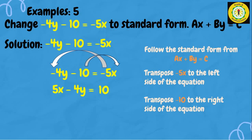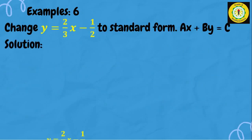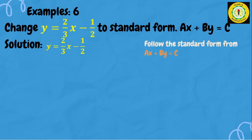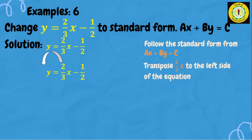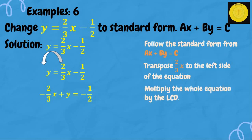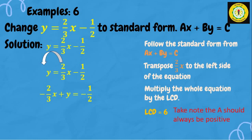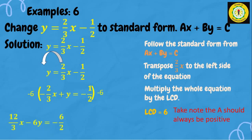For our last example, change y equals two-thirds x minus one-half to standard form ax plus by equals c. We transpose two-thirds x to the left side — it becomes negative two-thirds x. To simplify, we multiply the whole equation by the LCD, which is 6. Since the coefficient of x must be positive, we multiply both sides by negative 6. The answer is 4x minus 6y equals 3.